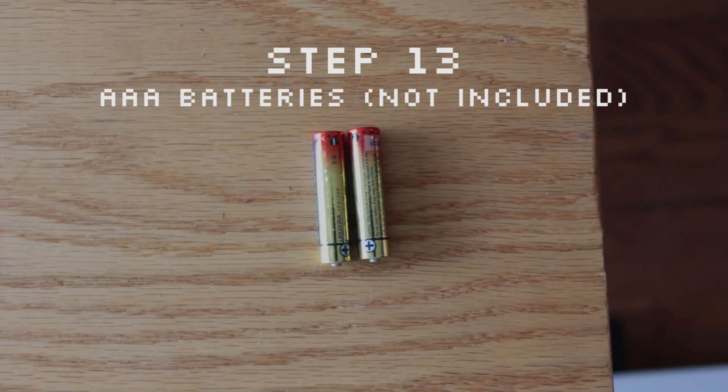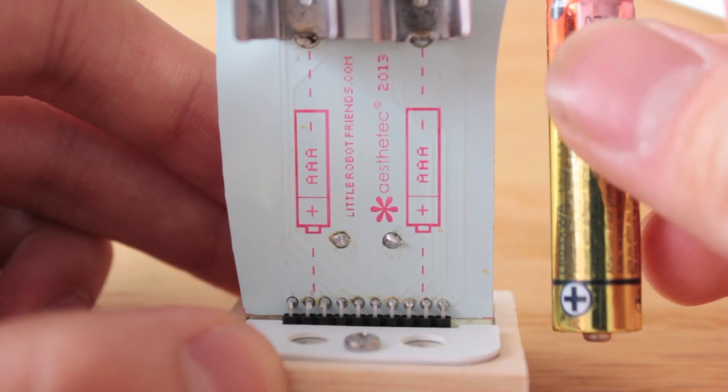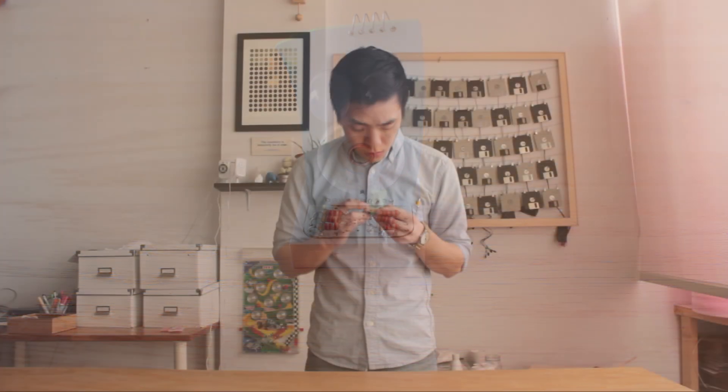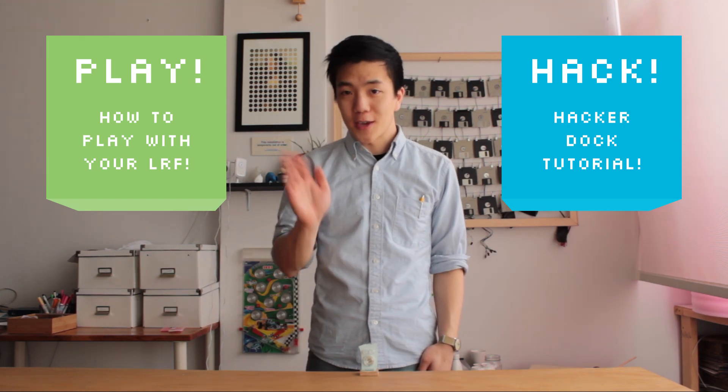Lastly is step thirteen, powering up your robot. Take your triple A batteries and insert them positive side down. And that's it. Make sure to check out our other videos on how to get the most out of your little robot friends. Thank you.